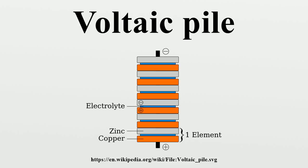Volta demonstrated in 1794 that when two metals and brine-soaked cloth or cardboard are arranged in a circuit they produce an electric current. In 1800,